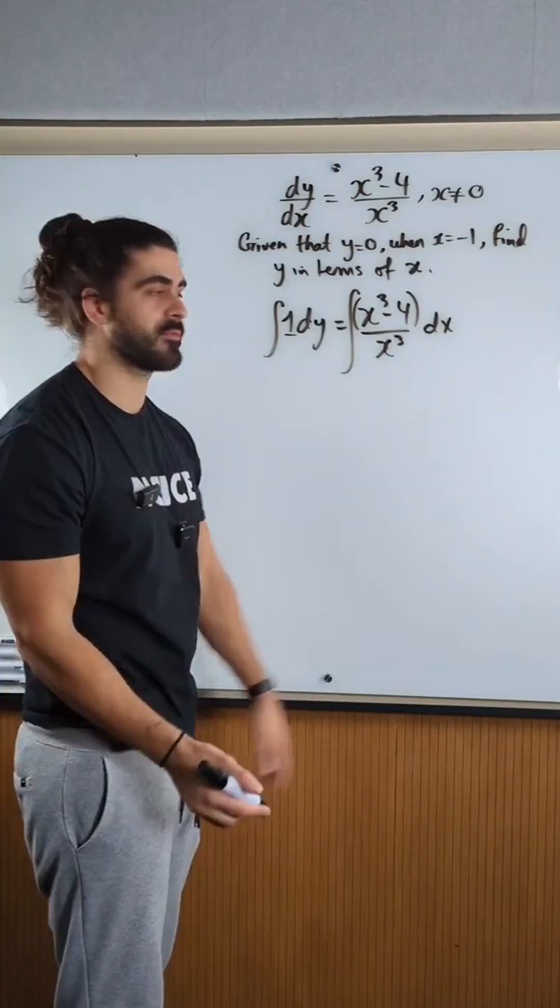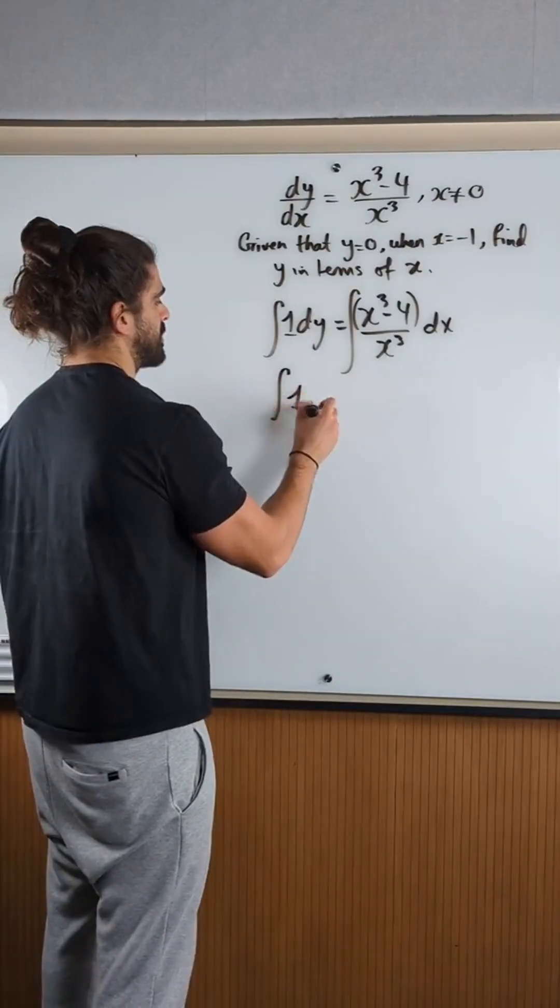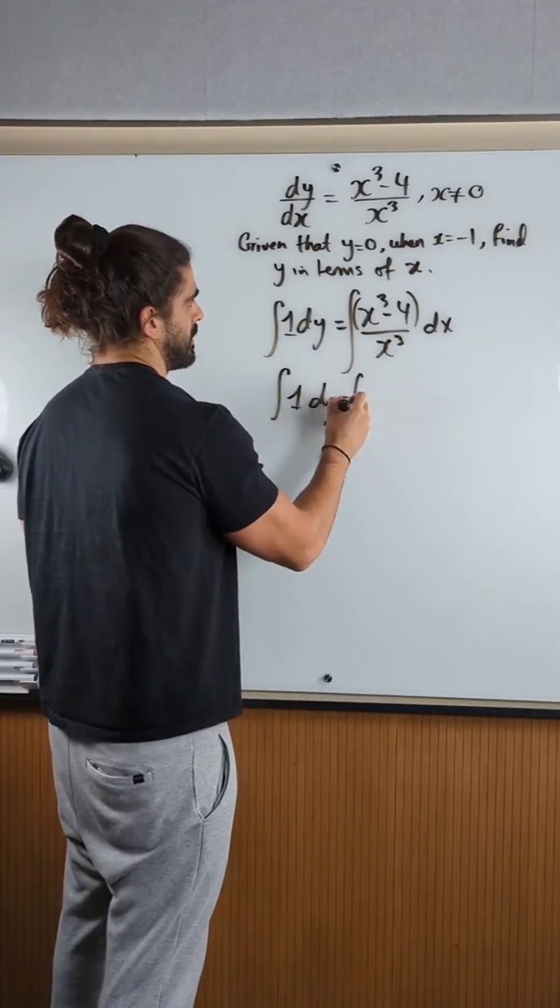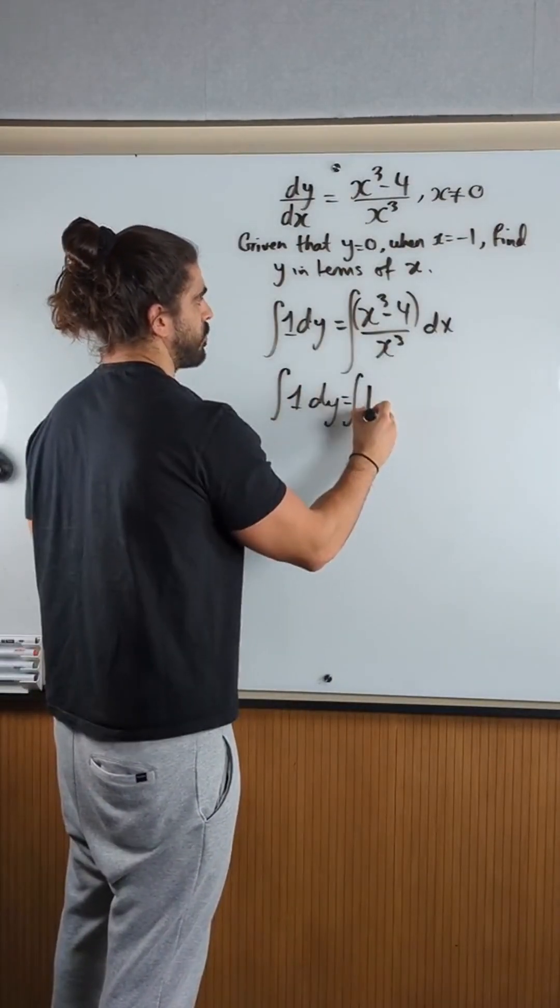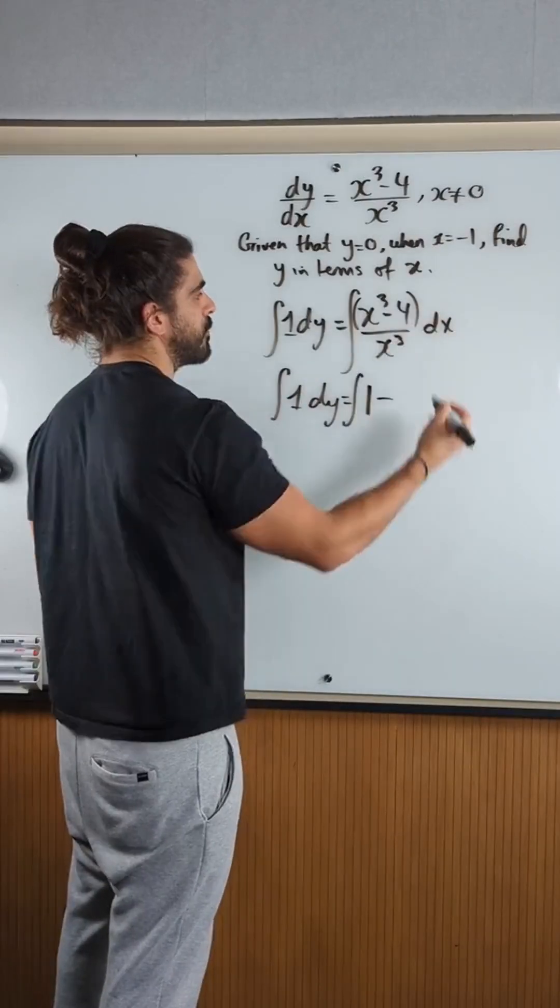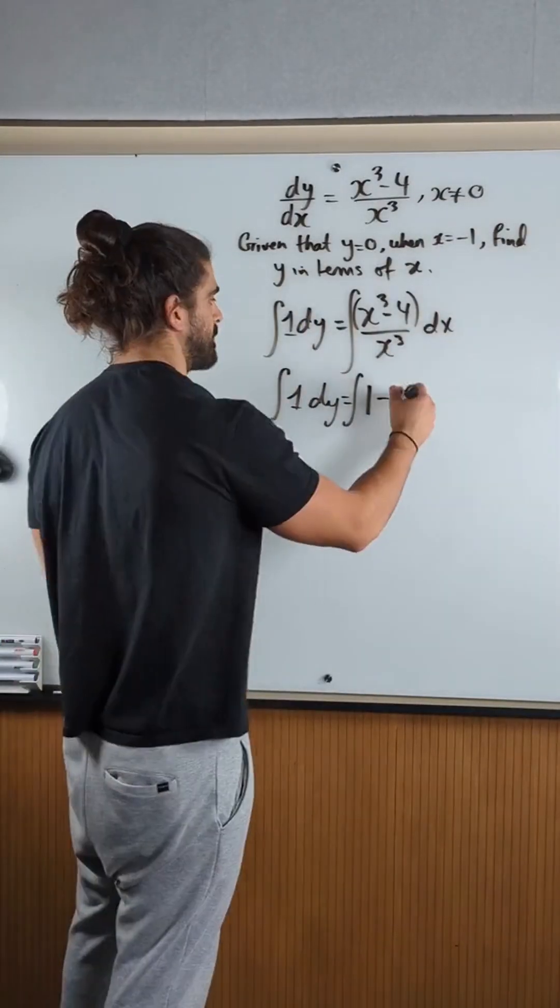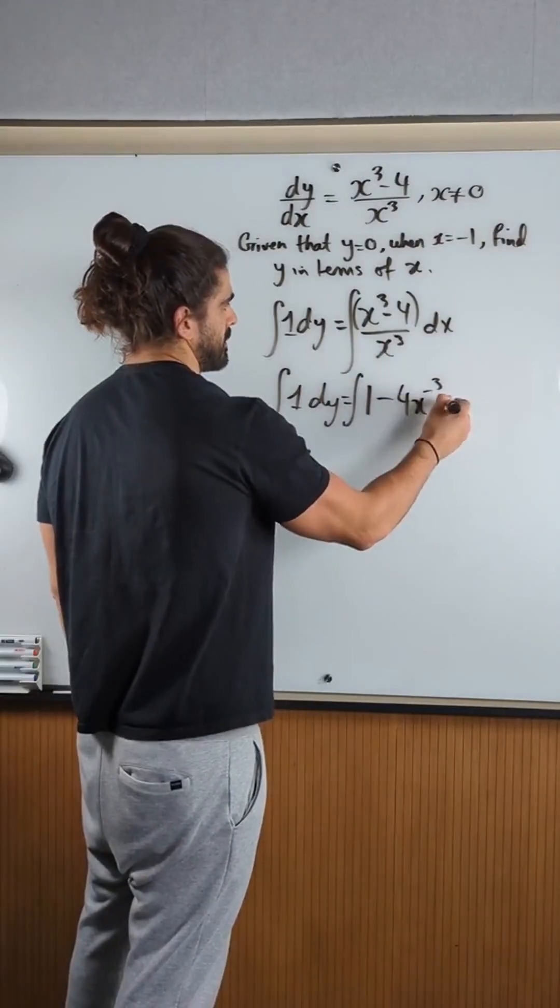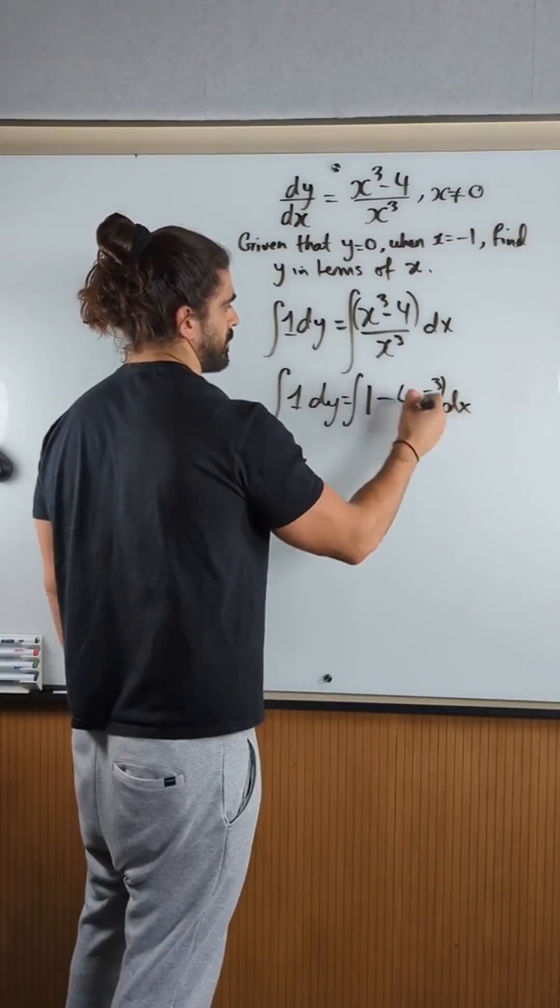Well, it's actually really easy. You just split the fraction, so you're integrating x cubed over x cubed, which is 1 minus 4 over x cubed, which you bring up - the x cubed is 4x to the minus 3 dx. So put a bracket there.